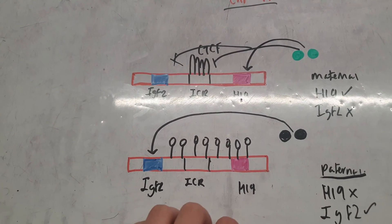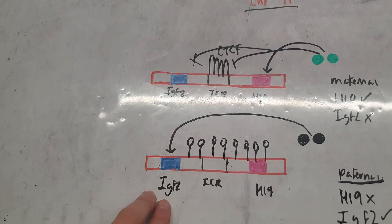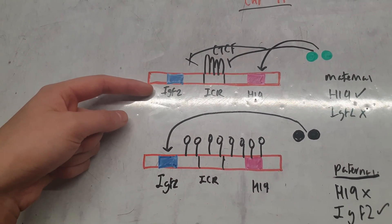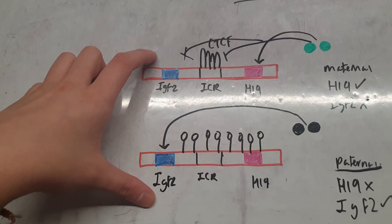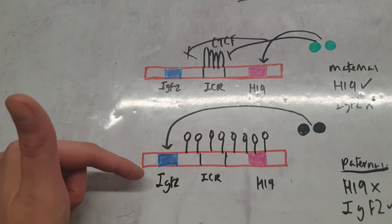But with IGF2, this is a neonatal growth factor. Essentially, if this imprinting goes wrong and we have IGF2 being expressed from both the maternal and paternal chromosomes, we have two of these genes coding for IGF2.